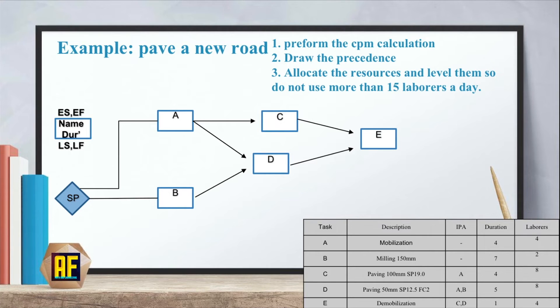Now going to the node diagram to perform the CPM calculation. Our early start for activity A is 0 because it's the first task. Our duration is 4. 0 plus 4 is 4. Now for B, 0 plus 7 is 7. C, 4 plus 4 is 8. D, 7 plus 5 is 12. And E, 12 plus 1 is 13. Now don't forget the end point that we always need to do at the end of the project. And if you're a student that's what you need to do to not lose point on your exam. And now let's start going back.